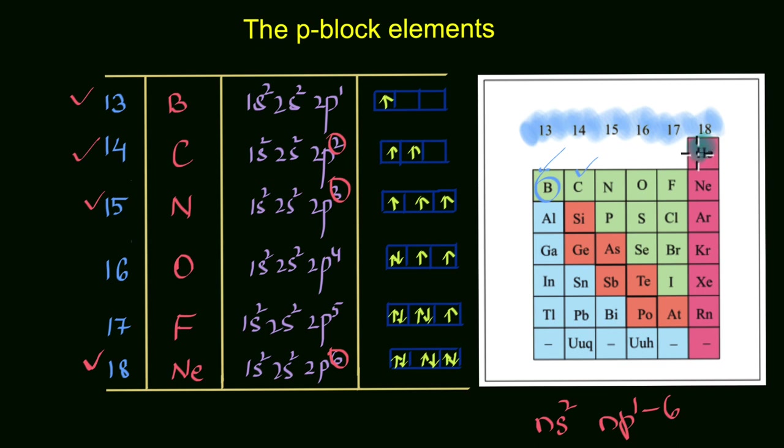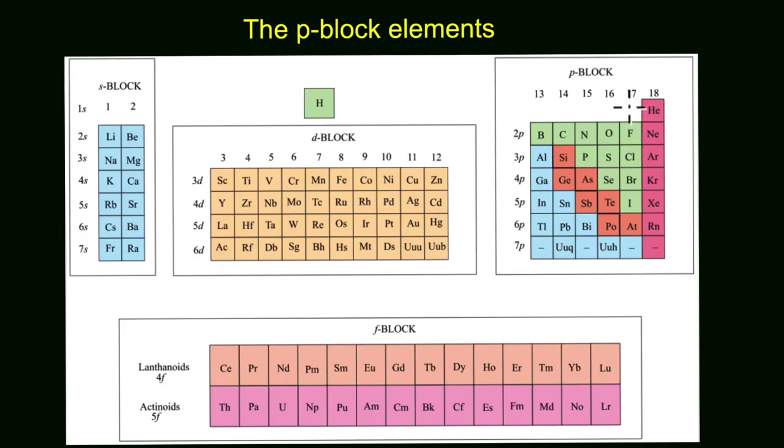But wait a minute—what about helium? Helium has only two electrons, so its electronic configuration is 1s². This is interesting because helium has no electrons in the p orbital, so why are we placing it in the p-block and not in the s-block?